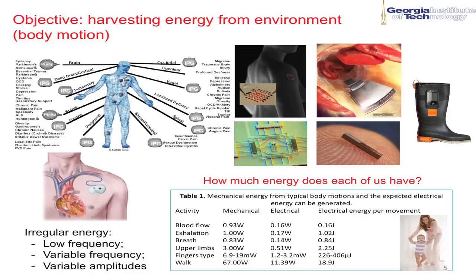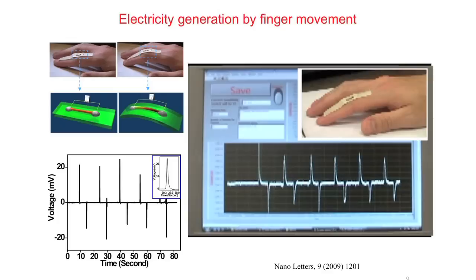We use this material mainly for two purposes. The first purpose is to convert tiny physical motion, like energy in our biological system, into electricity. This material has a property called piezoelectric property. That means for this crystal, if you apply a strain, it generates voltage inside, and this voltage can drive electrons to flow. Then you convert mechanical energy into electricity.